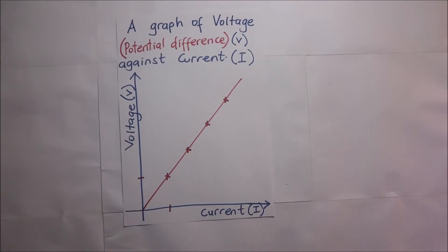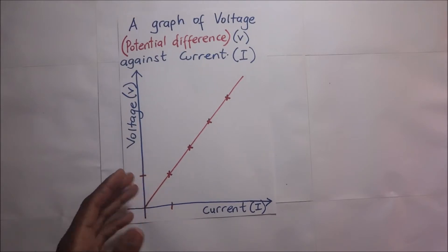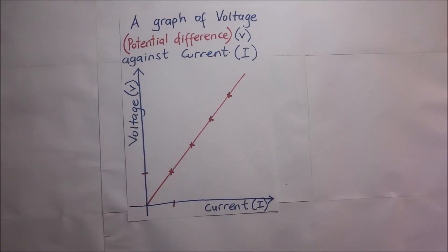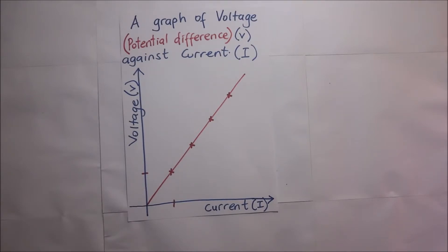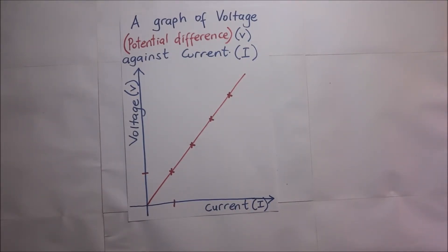This constant is what we are calling the resistance of this circuit, and this brings us to Ohm's law. From Ohm's law, he stated and concluded after his experiment that the current through a metallic conductor is always directly proportional to the voltage or potential difference across the ends, provided temperature and other physical conditions are held constant.